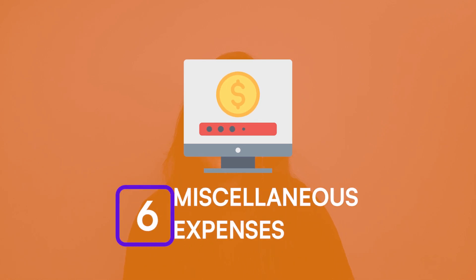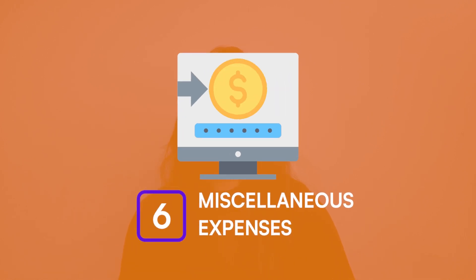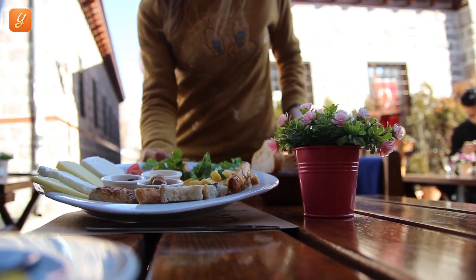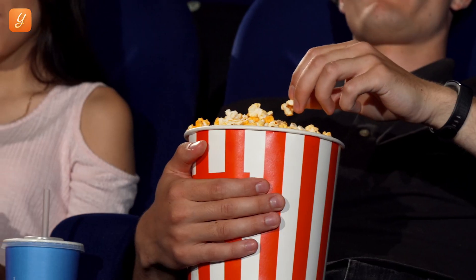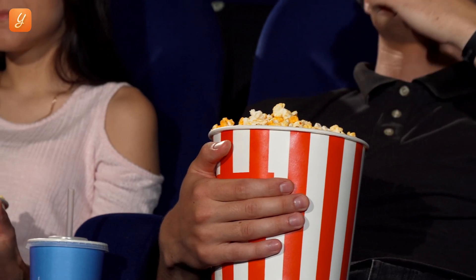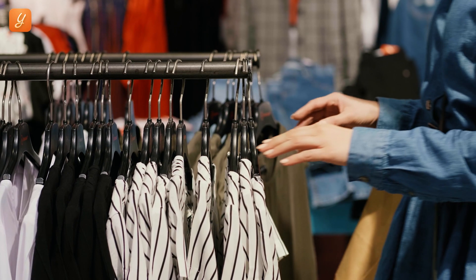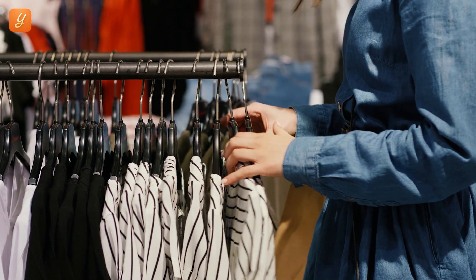Last on the living expense list, we have miscellaneous expenses. To sum up this category, we have components like going to restaurants, participating in leisure activities, grooming, shopping for clothes and shoes, and so on. The average expenses of each of these categories will now appear on your screen.